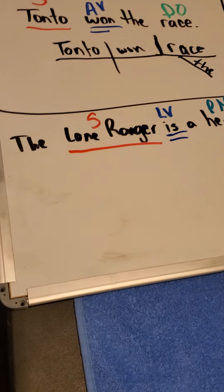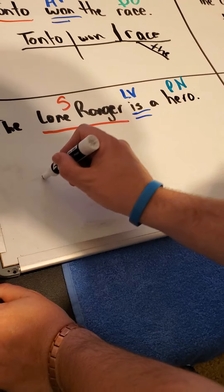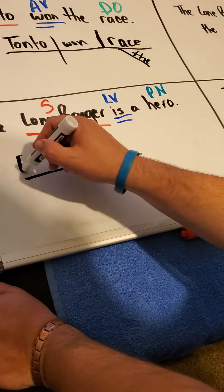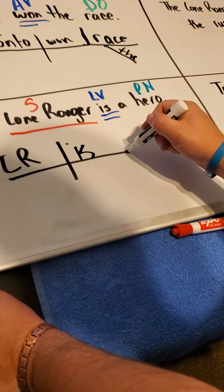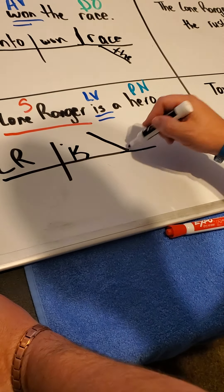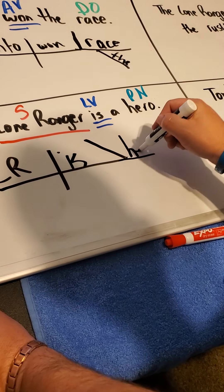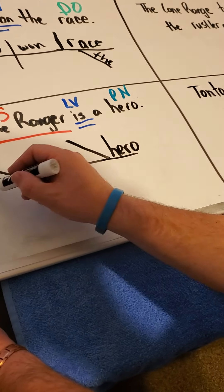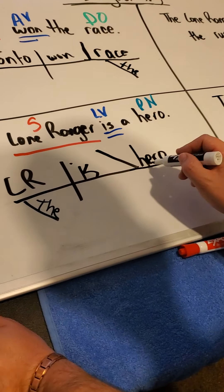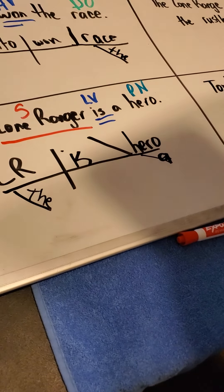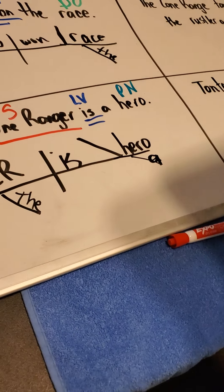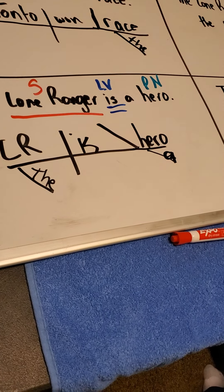The diagram looks like this. Again, with the T. Lone Ranger — pretend I wrote that out. Is. This time it's going to be a slanted line, and the word hero. 'The' goes here, 'a' goes here. Let me check the book to be sure I got it right. This is on page 284 in your book if you want to read along with me.